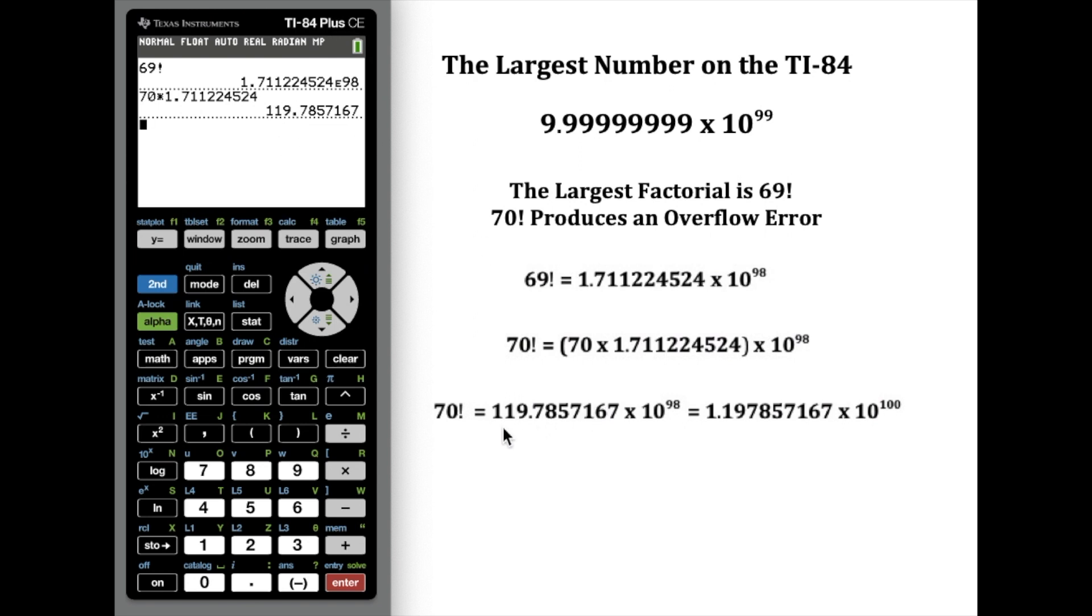Which means that 70 factorial is that great big number times 10 to the 98th power. If I go ahead and hop the decimal two more places to the left, I'm going to get 70 factorial as 1.197857167 times 10 to the 100th, because I took two additional hops to the left.